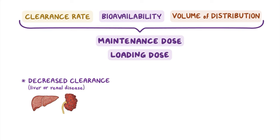As a quick recap: routes of administration include enteral routes like oral, sublingual, buccal, and rectal administration; parenteral routes like intramuscular, subcutaneous, and intravenous administration; and topical or local administration. The choice between them mainly depends on the properties of the medication and the setting in which it's used. Dosing regimens determine the frequency and dosage of a medication, which include single dosing, continuous infusion, and intermittent dosing regimens. Maintenance and loading dose calculations depend on the bioavailability, clearance, and volume of distribution of a given medication.